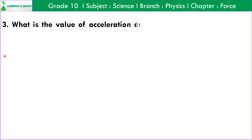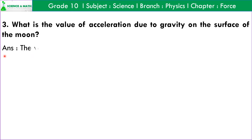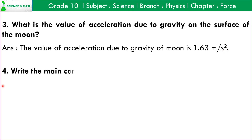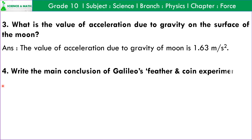Question number 3: What is the value of acceleration due to gravity on the surface of the moon? Answer: The value of acceleration due to gravity of the moon is 1.63 meter per second square.